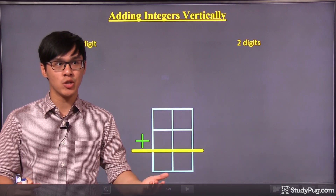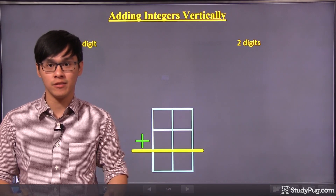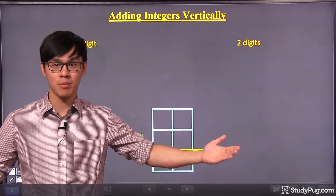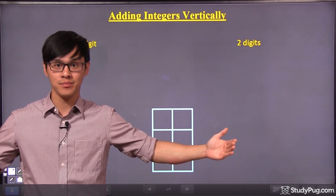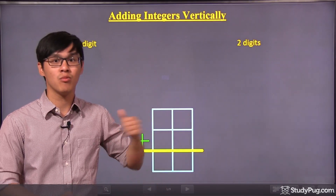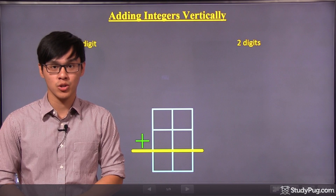Because if you're adding 100 plus 150, are you actually going to have a number line that long? No, right? So this method will be a lot more useful.